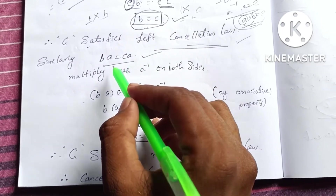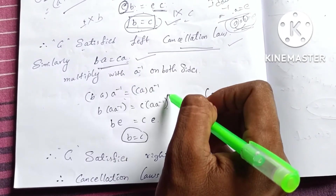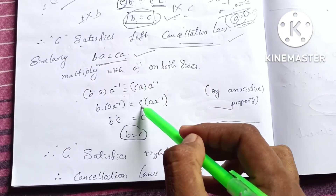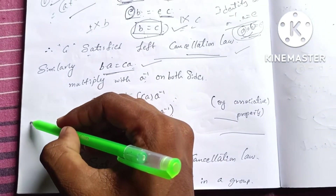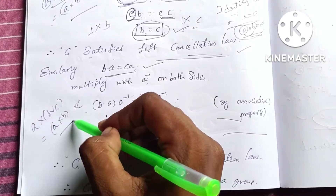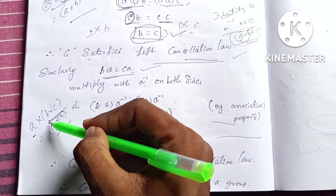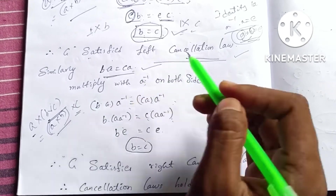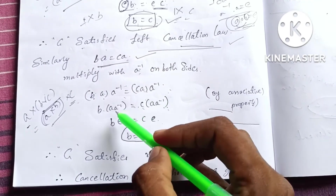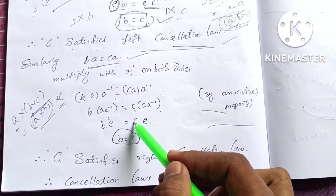Similarly, suppose BA is equal to CA. Then multiply by A inverse on both sides: BA into A inverse is equal to CA into A inverse. Using the associative property, B into A into A inverse equals C into A into A inverse. So B into E is equal to C into E.